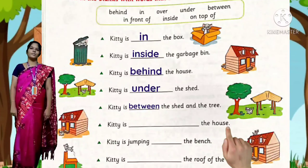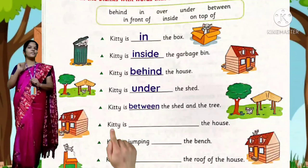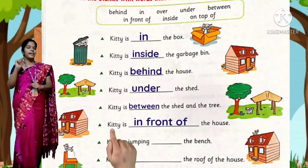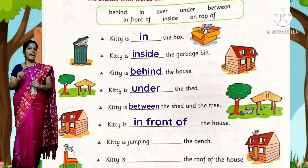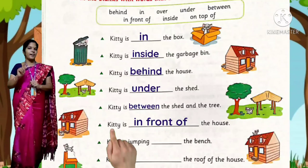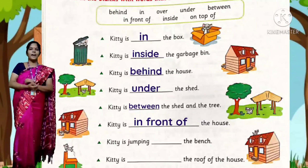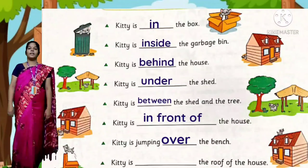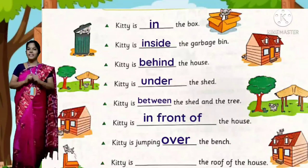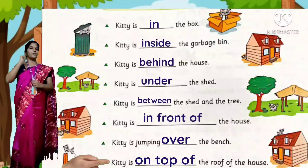Kitty is ___ the house. Kitty is in front of the house. Kitty is jumping ___ the bench. Kitty is jumping over the bench. Kitty is ___ the roof of the house. Kitty is on top of the roof of the house.